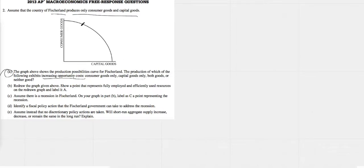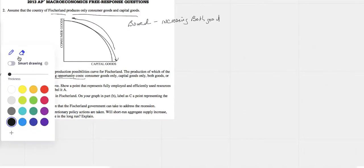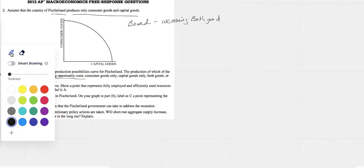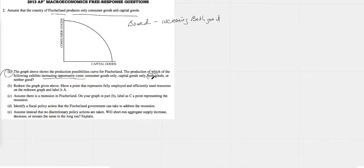Anytime you see a bowed-out PPC, it has increasing opportunity cost, obviously for both goods. The understanding here is no matter whether you start producing more consumer goods, the opportunity cost of capital goods would increase, or if you start producing more capital goods, the opportunity cost for consumer goods is going to increase. That one takes a little bit of thinking, but it does have to be both goods.